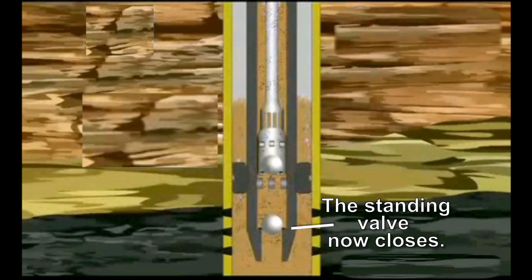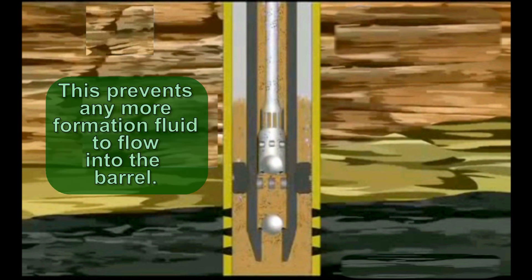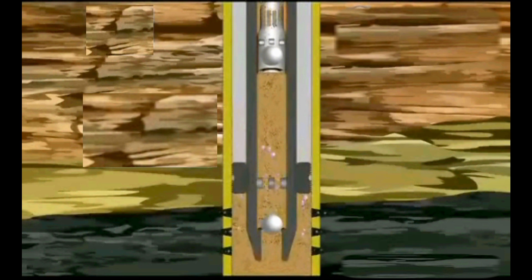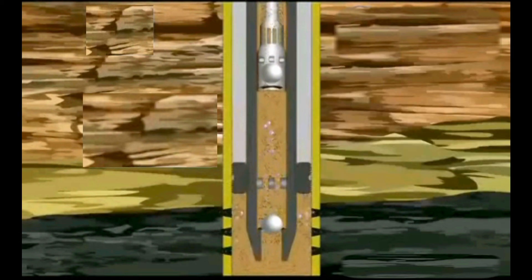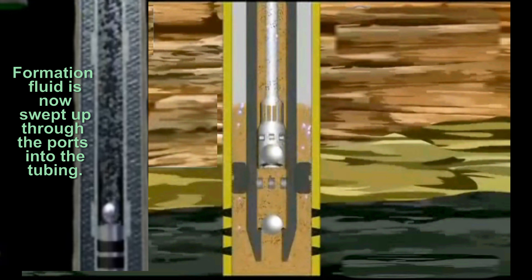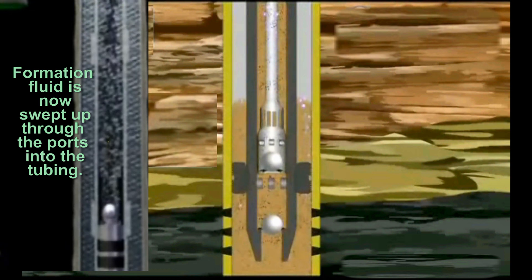In the downstroke, the standing valve now closes, which prevents any more formation fluid to flow into the barrel. As the plunger descends through the fluid in the barrel, the traveling valve opens. Through this valve's opening, the formation fluid that had been trapped in the barrel during the upstroke is now swept up through the ports into the tubing and eventually up into the flowline on the downstroke.